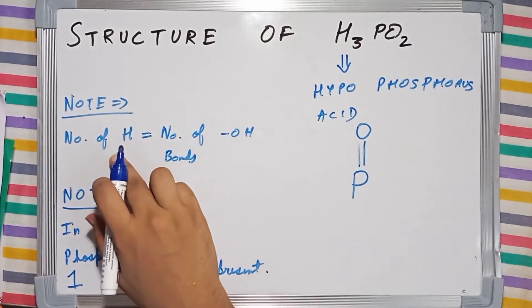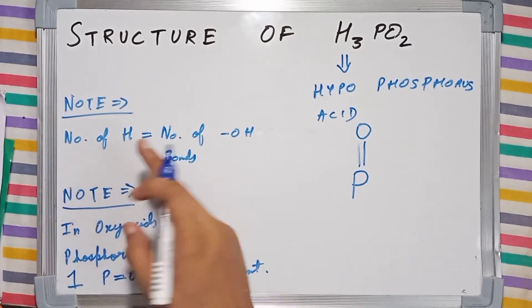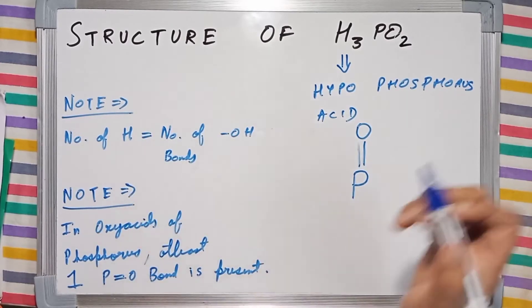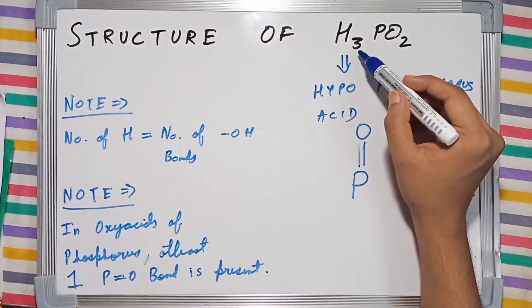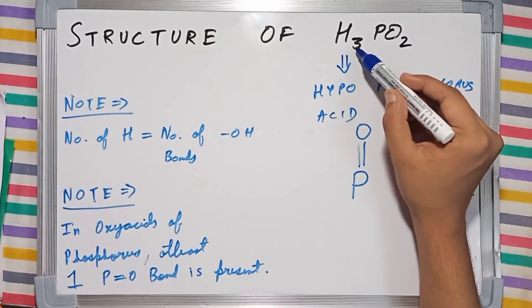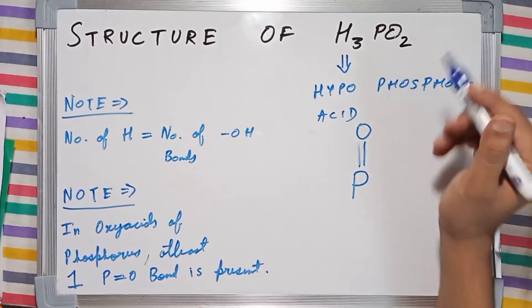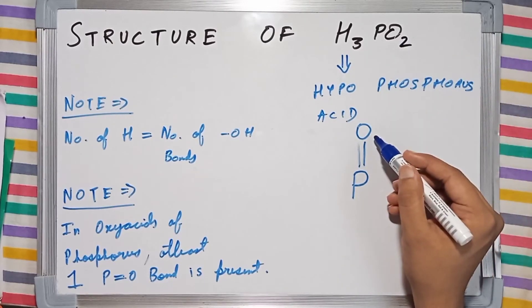Now we are going to go ahead with the first note, which states the number of hydrogen atoms will be equal to the number of OH bonds. We are left with just three hydrogen atoms and a single oxygen atom, as we have already used the other one.